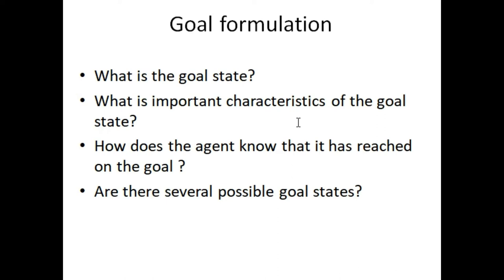If we know the answers to these questions, then we can move from the initial state to another state and perform actions. Our problem-solving agent can perform actions if the agent knows about these questions. The third question is: how does the agent know that it has reached the goal state? This is possible when our agent knows about the characteristics of the goal state.